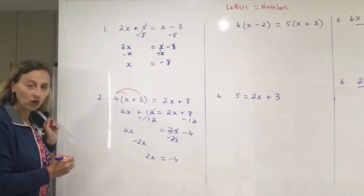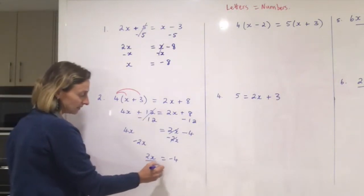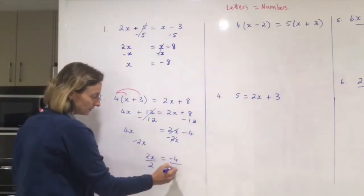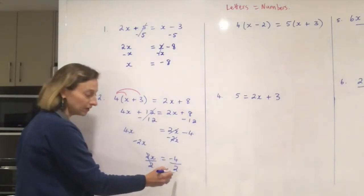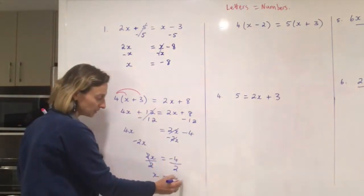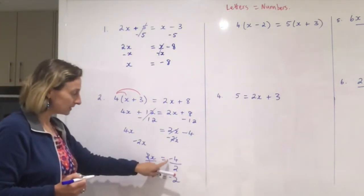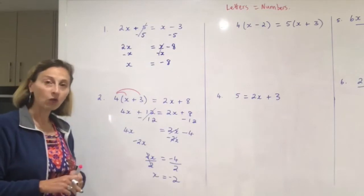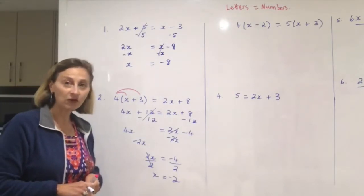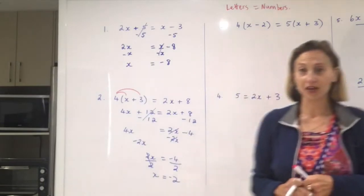And rule number four: divide by the number last. So I divide by two, and I'm left with x equals minus four divided by two, which is minus two. Remember, if you understand everything except for the minuses and the pluses and negative numbers, watch one of my other videos on how to do negative numbers so you don't get confused with that.